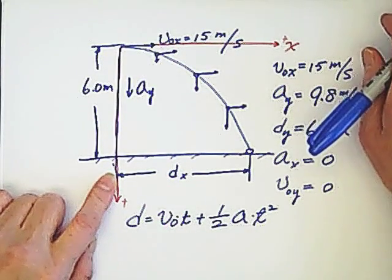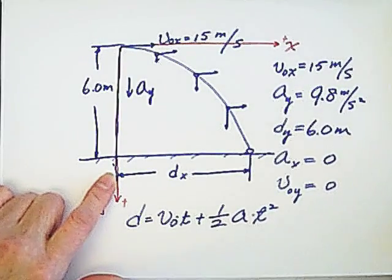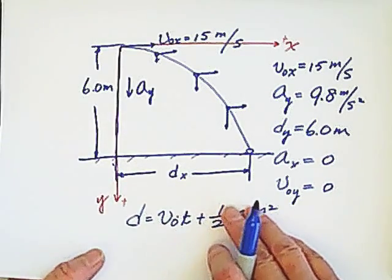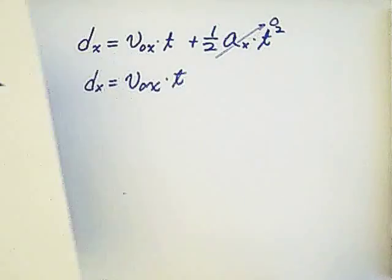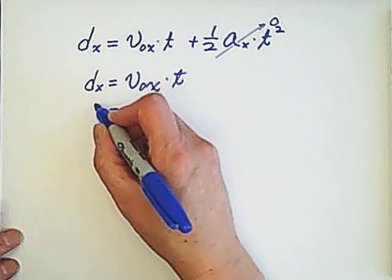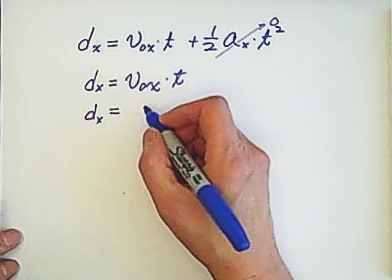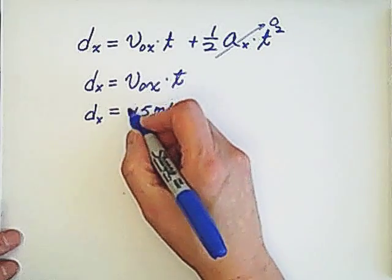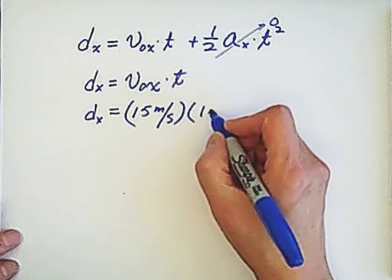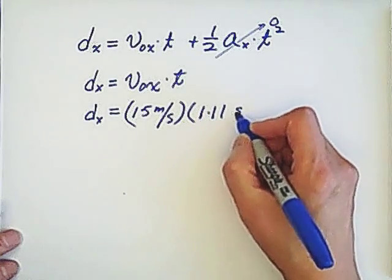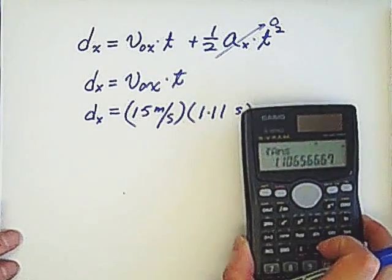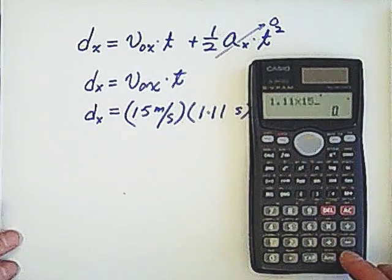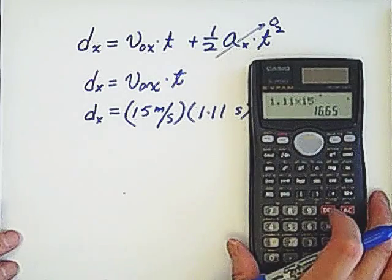So the time we find from the y-direction, you can use to the x-direction because they are the motion on the same time. So we can use dx equals to initial velocity, we have 15 meter per second, multiply the t is 1.11 second, and we can calculate 1.11 multiply 15 equals 16.65 meters.